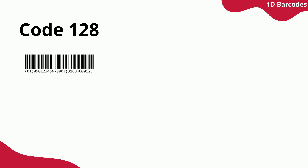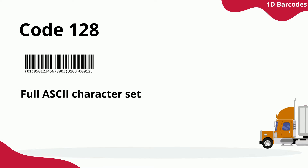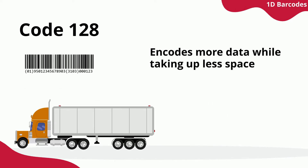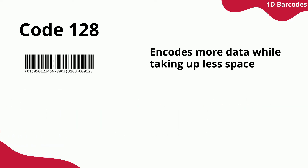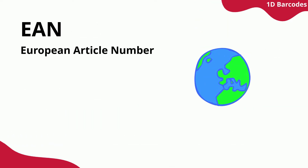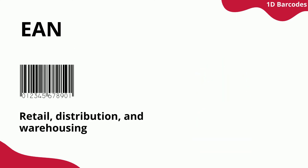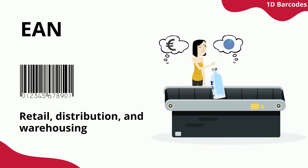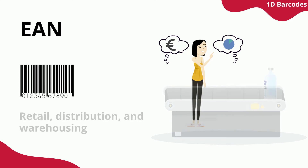Barcode 128 also comprises the ASCII character set. It is most frequently used in transporting goods, especially to mark containers for distribution. The EAN barcode, short for European Article Number, helps retailers to identify individual products which can then be linked to quantities or prices.